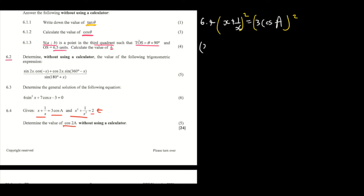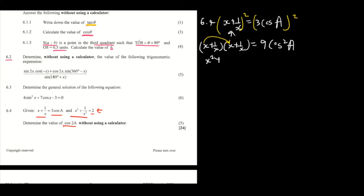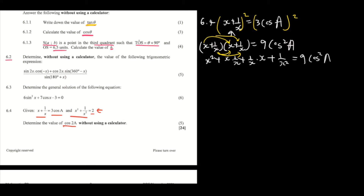So we expand (x + 1/x)² as (x + 1/x)(x + 1/x), which equals 9cos²(a). Doing the multiplication: x times x gives x², x times 1/x gives 1, 1/x times x gives 1, and 1/x times 1/x gives 1/x². This all equals 9cos²(a).